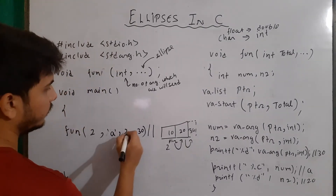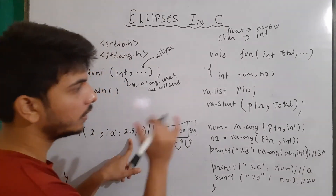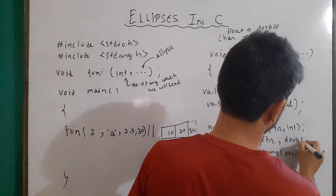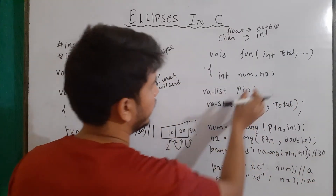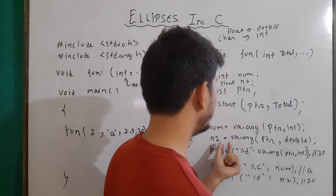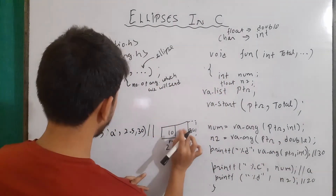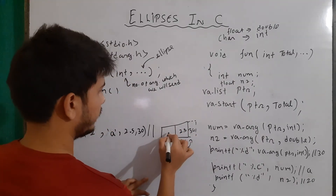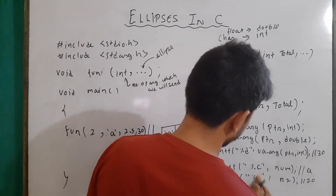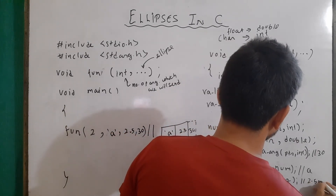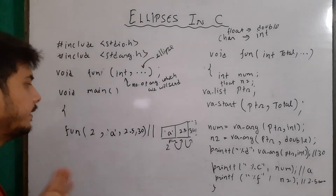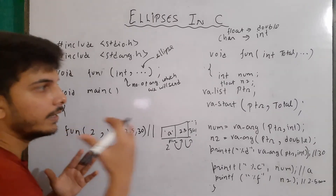Similarly, let's say I am sending a float value — 2.5. Float values are promoted to double, so here instead of writing int I will write double. This is the second value, so I am changing it to double. So n2, which I'll declare as type float, will hold the value of type double. So whatever value is present — 2.5 — it will be assigned to n2, and then here I write %f and it will give me output as 2.500 with some additional zeros according to its size. This is how we can send variable numbers of data with variable data types.